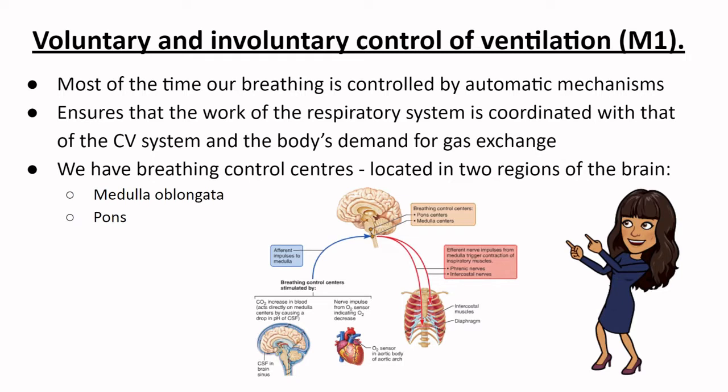Our breathing control centers are located in two regions of the brain: the medulla oblongata and the pons. The medulla sets the basic breathing rhythm with the help of the pons, and when we take deep breaths there are negative feedback systems which prevent our lungs from over-expanding. There are basically stretch sensors in our lungs which send messages in the form of nerve impulses back to the medulla to inhibit the breathing control center.